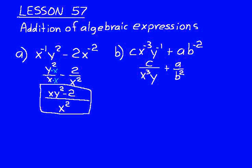Now we need to get a common denominator and we can write that over to the side. That would be b^2x^3y. That would be our common denominator.